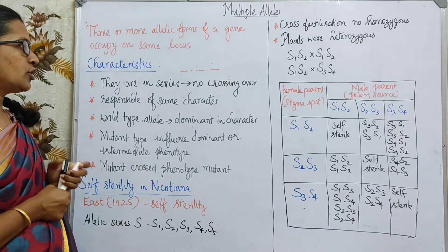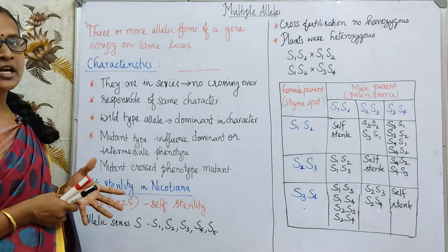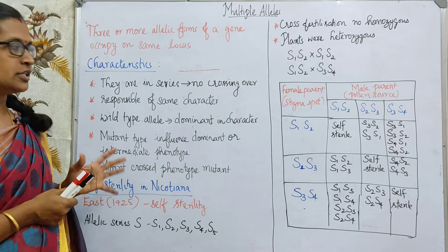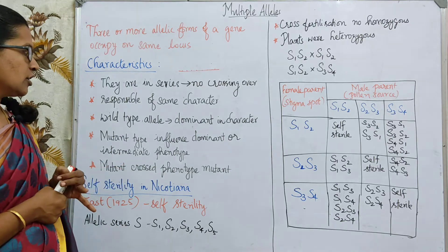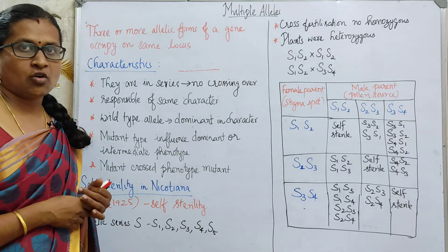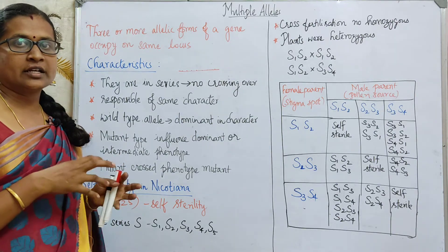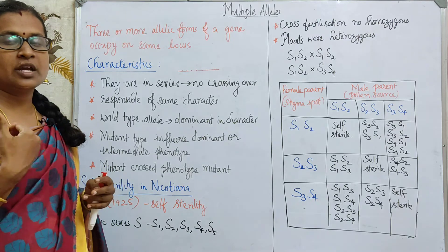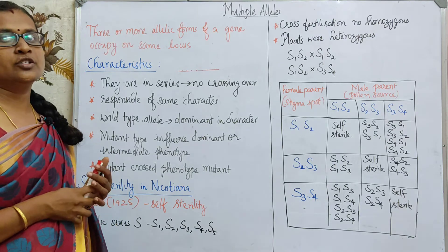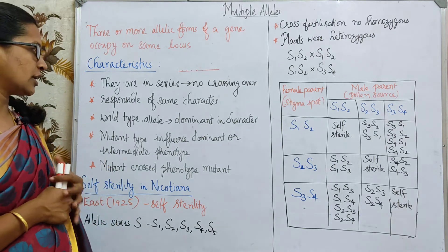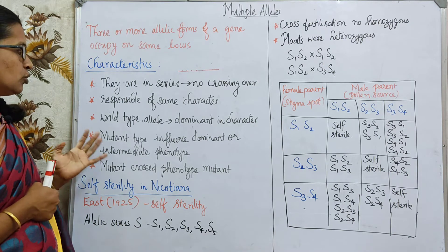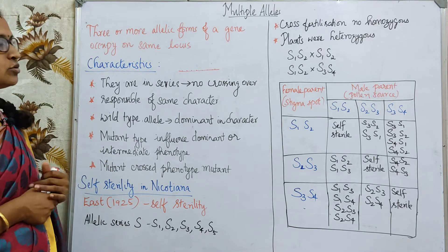The next characteristic is the wild type allele. In multiple alleles, wild type alleles are generally dominant in character — they are not recessive. Dominant means the character which is going to be expressed, as we all know.